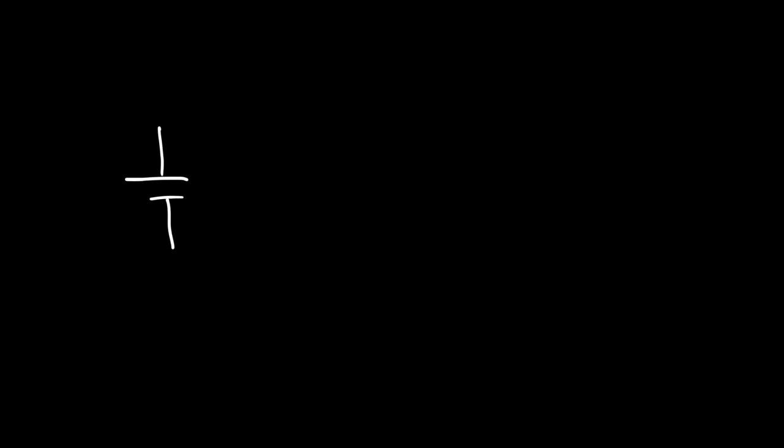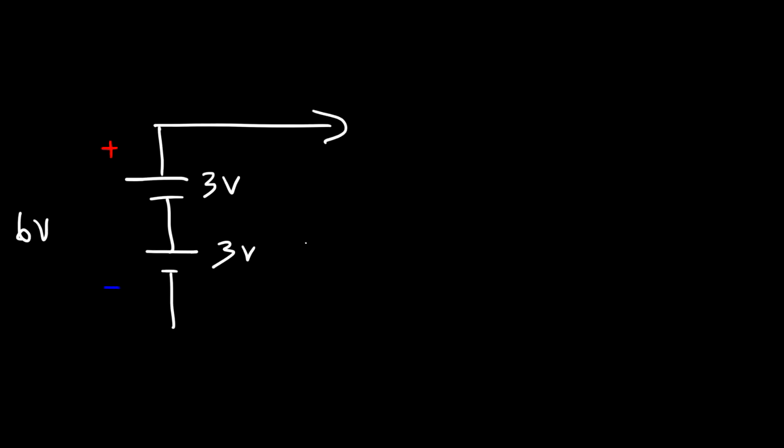Sometimes you might have multiple batteries connected to increase the voltage. If you see this, it just means that there are many batteries connected. For example, if each battery is 3 volts and there are two batteries, the total voltage is 6 volts. That's how you connect two batteries in series to increase the voltage.